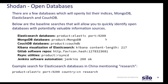The next search method we'll cover is to discover open databases in Shodan. There are a few databases that openly list their indices — MongoDB, Elasticsearch, and CouchDB are just a few examples. There are some baseline searches that allow the user to quickly identify open databases that may have valuable data. An example of an Elasticsearch database in China mentioning 'research' is shown at the bottom, and we'll go over to Shodan and test that one out.